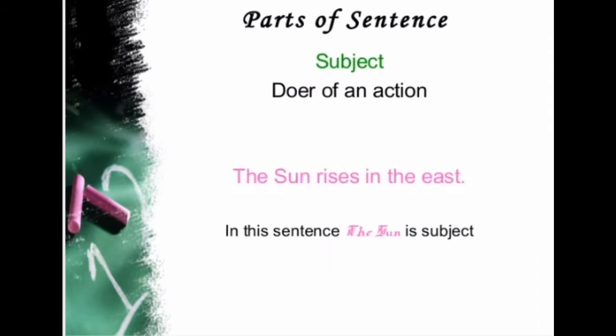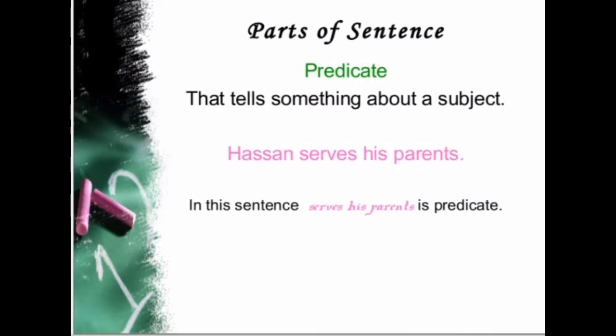Subject is basically the doer of an action. Like 'The sun rises in the east.' In this sentence, who is the doer? Who rises? The sun. So 'the sun' is the subject — doer of the action. And what about the predicate? Predicate tells us something about the subject. Like 'Hasan serves his parents.' So 'Hasan' is the subject because it is the doer, but 'serves his parents' is the predicate because it is telling us about the subject.